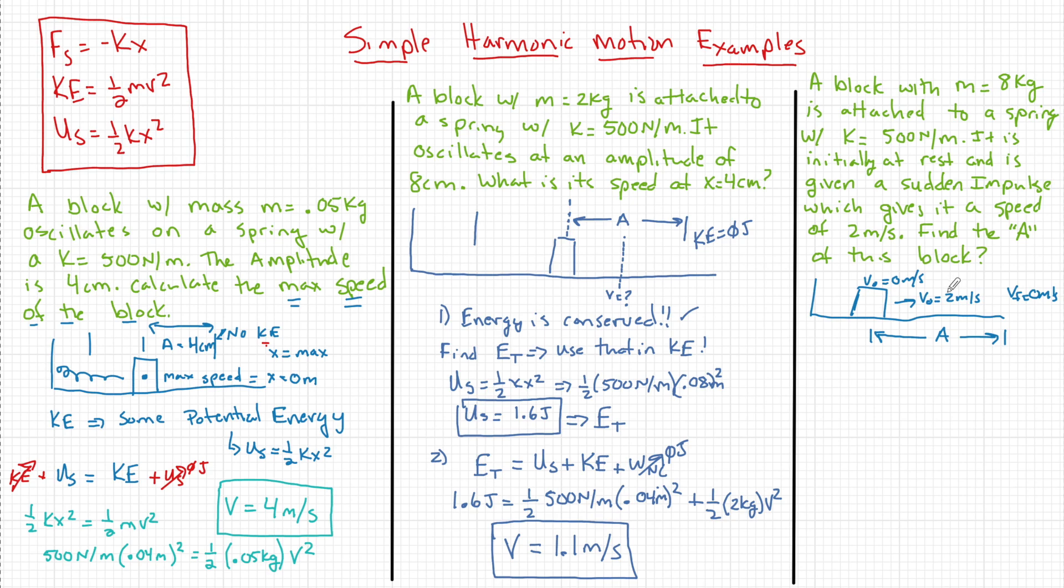Now guys, the reason we cannot use kinematics here is because kinematics assumes that A is equal to, is constant. And that is not the case here. That is not true. A varies. Remember as X varies, so does FS. And if FS varies, then A equals F net over M, then A must vary. So you cannot use kinematics. None of that can apply because A is not constant.